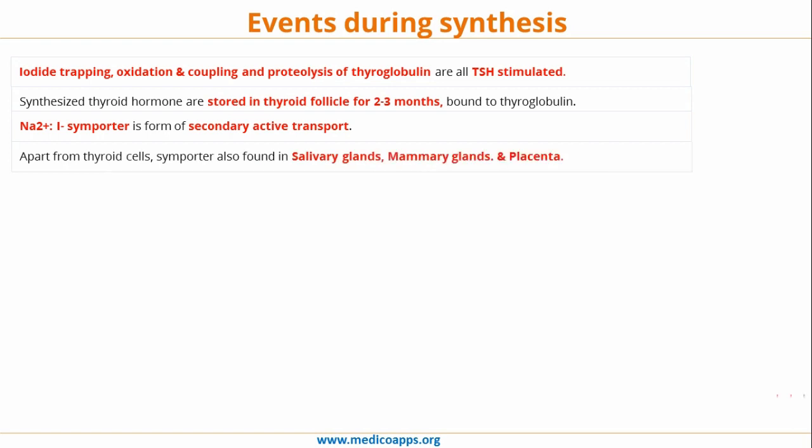Apart from thyroid cells, this symporter is also found in the salivary gland, mammary gland, and placenta.